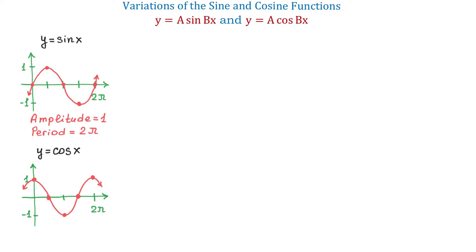In this video, we will talk about variations of sine and cosine functions: y equals a sine of bx, and y equals a cosine of bx. Here to the left we have the graphs of basic sine and cosine functions, and both of them have the amplitude of 1 and the period of 2 pi. The sine function passes through the origin, but the cosine function passes through the point (0, 1).